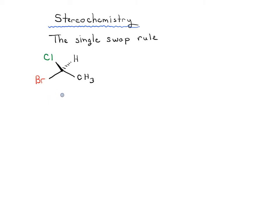Let's have a look at this molecule here that I've drawn. Note that we've got the central carbon, which I actually didn't draw, and we've got four different groups attached to this central carbon: chlorine, hydrogen, CH3, and bromine. So this is a chiral center here.